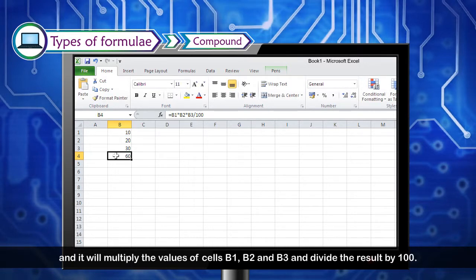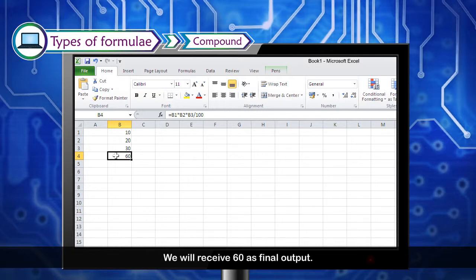It will multiply the values of cells B1, B2 and B3 and divide the result by 100. We will receive 60 as final output.